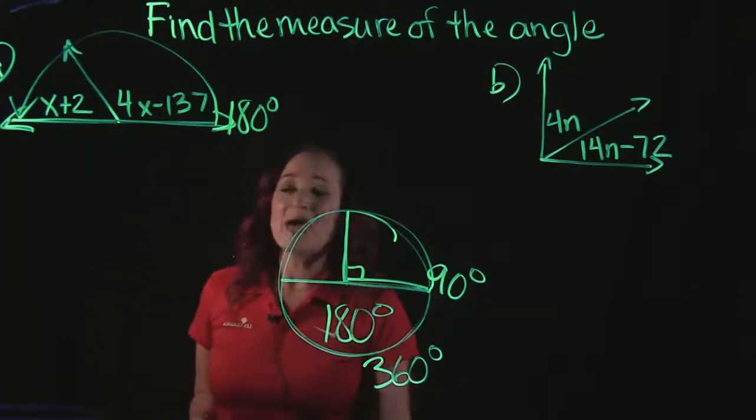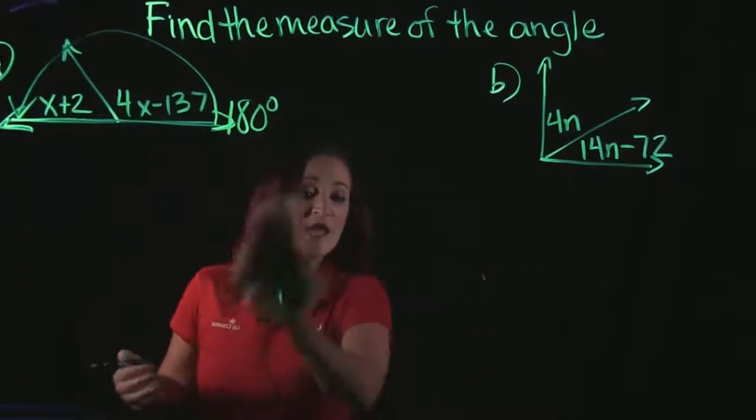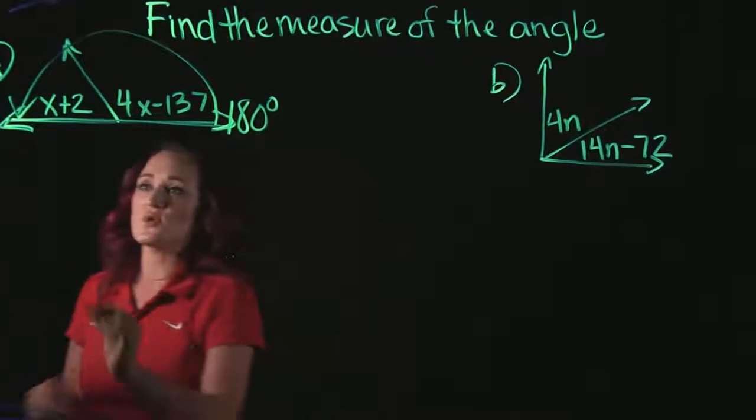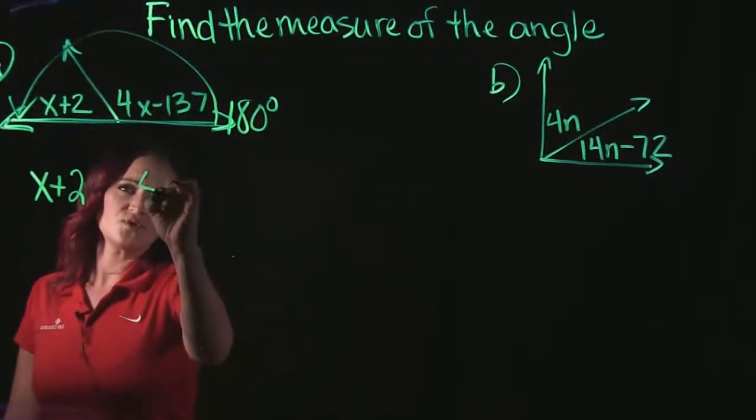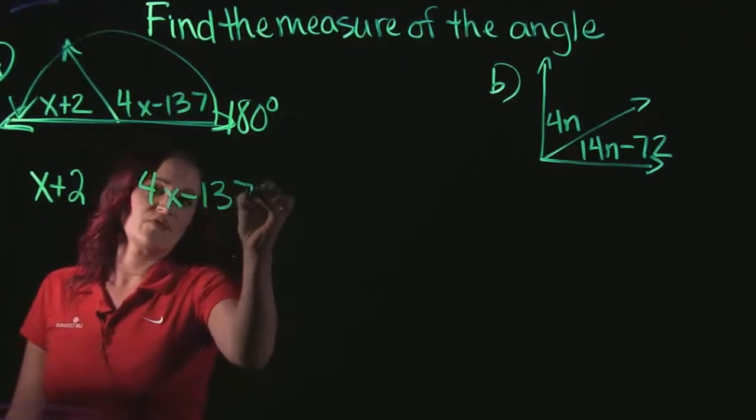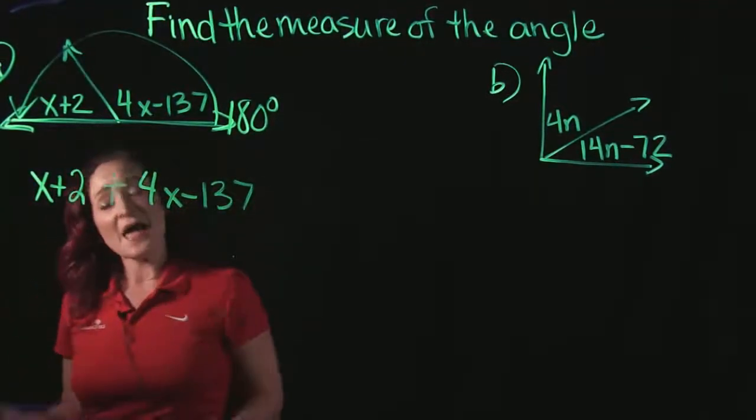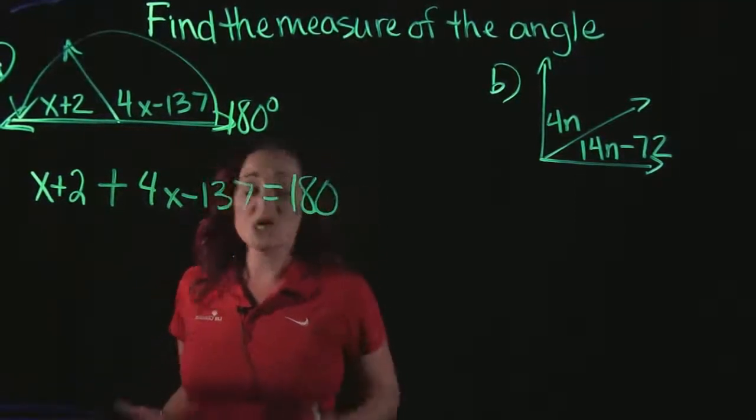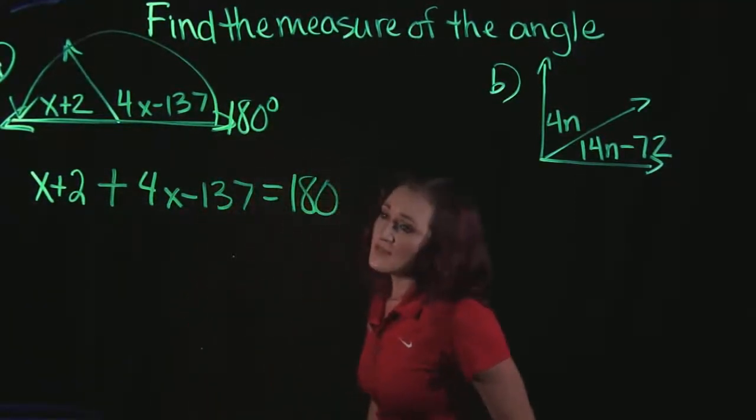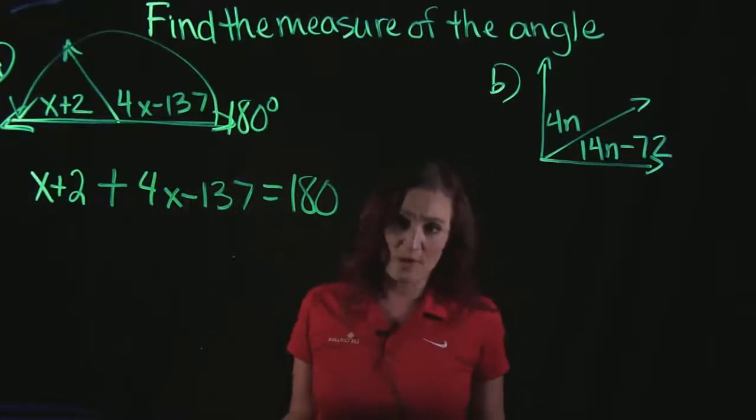So what I'm going to do mathematically is I'm going to take those two angles. So angle 1 is x plus 2. Angle 2 is 4x minus 137. And I'm going to add these two angles up and I know that these two angles are going to equal 180 degrees. And this is how I set up this problem here.